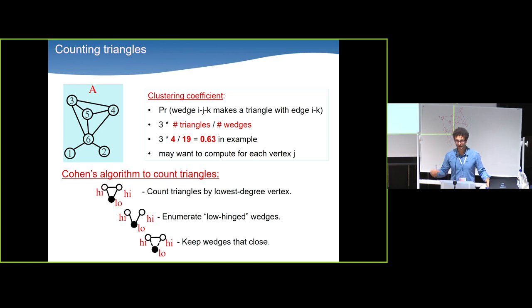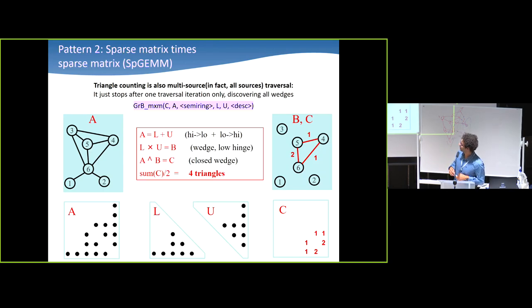The whole idea is, how can I create triangle counting in matrix form? I'm going to cut my matrix into two pieces. This is not factorization. This is just A equals L plus U. I'm just creating two matrices, cutting them on the diagonal. And what is L doing? L is really all the edges from a high-numbered vertex to a low-numbered vertex. And U is the opposite, from a low-numbered vertex to a high-numbered vertex. When I multiply L and U, I am basically enumerating all the wedges of the form I want to count, which is at the bottom there, where the low-degree vertex is the hinge. I'm not counting every triangle six times. I'm only counting every triangle actually twice here.